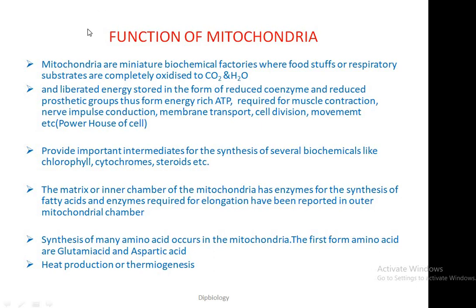This is the third segment, which deals with the functions of mitochondria. Mitochondria are miniature biochemical factories where foodstuffs or respiratory substrates are completely oxidized to carbon dioxide and water. The liberated energy is stored in the form of reduced coenzymes and reduced prosthetic groups that form energy-rich molecules required for muscle contraction, nerve impulse conduction, membrane transport, cell division, movement, etc. Due to this property, mitochondria are known as the powerhouse of the cell.